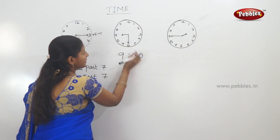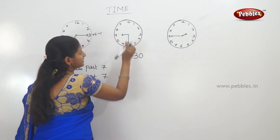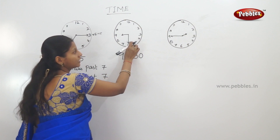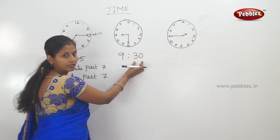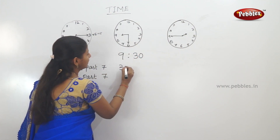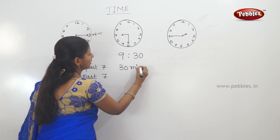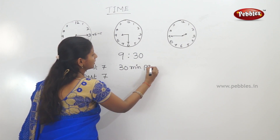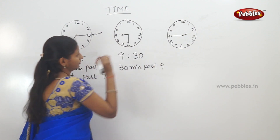How many minutes will pass? 30 minutes will pass. So when you count to 12, you will count. How many minutes will complete? 30 minutes will pass. That means 30 minutes past 9.